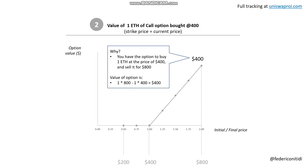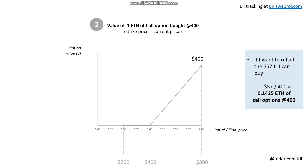Now the other side uses similar logic. A call option is the right to buy one Ethereum at the strike price — in this case $400. If the price is lower than $400, the value of the call option is pretty much zero because you can always buy ETH cheaper. But if the price goes to $800, the value of the call option is $400 — because you can buy one ETH at $400 and sell it for $800. So with the same logic, to offset the $57 impermanent loss, you buy $57 divided by $400 = 0.1425 ETH worth of call options at the money at $400.